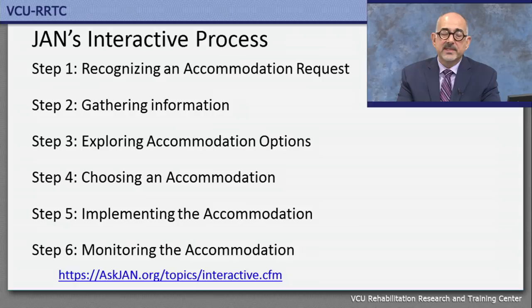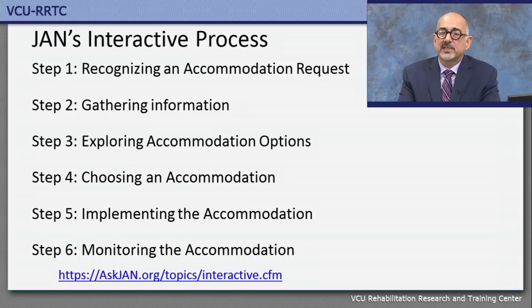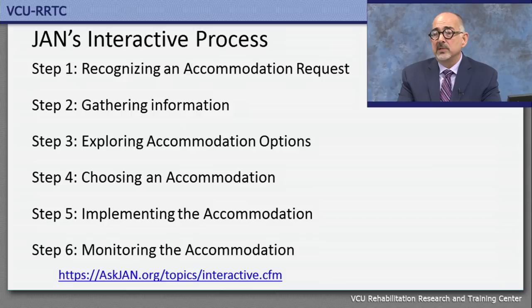Step two: gather information from sources like the Job Accommodation Network, from the individual with a disability, and from other service providers. Step three: explore accommodation options — the first option may not be the best, so consider a trial accommodation with a short contract stating you'll try it for six weeks and move to the next if it doesn't work. Step four: choose an accommodation — the employer has the right to choose under the law, but it must be effective for the individual. Step five: implement the accommodation — ensure assistive technology works with your existing software and hardware. Step six: monitor the accommodation over time, as environments change.